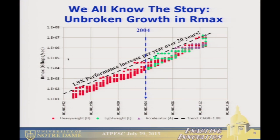This chart shows Rmax — the sustained flops per second for the top ten of the Top 500 machines over time. You have a compound annual growth rate of almost 2x: every year we had two times as many flops as we did the year before.